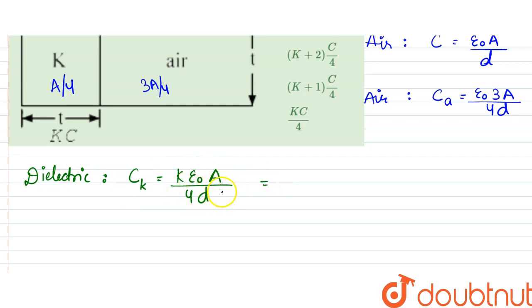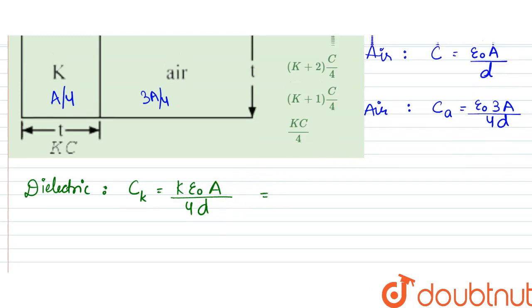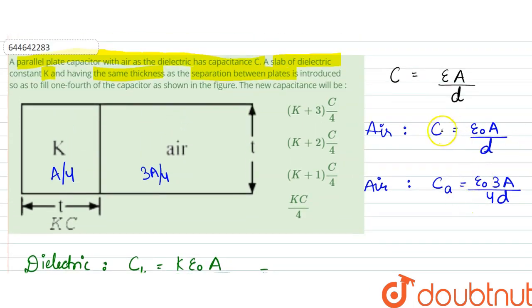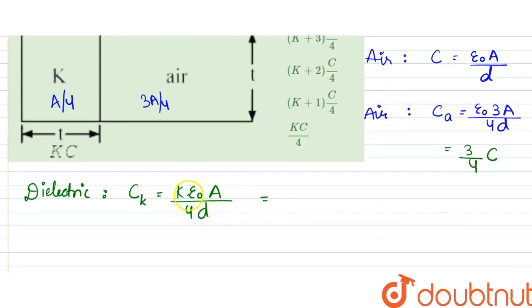This would be equal to, in terms of the initial one we can write this to be equal to three by four C, and we can write this to be K by four C.